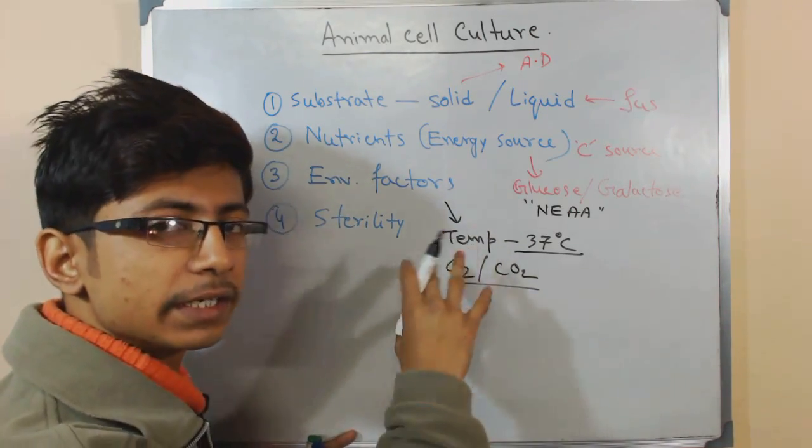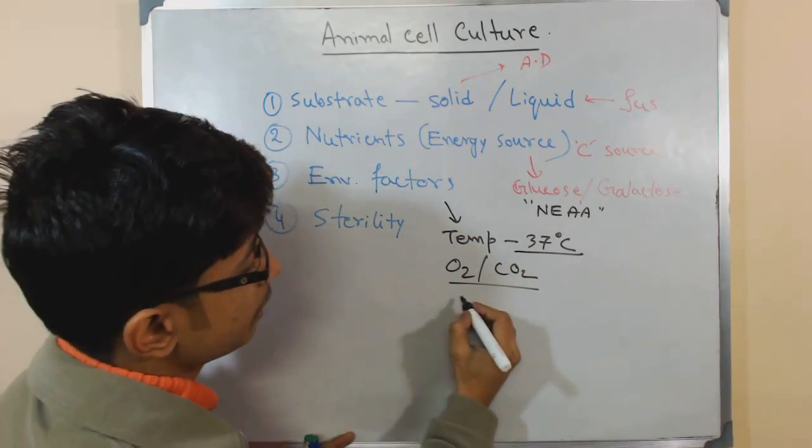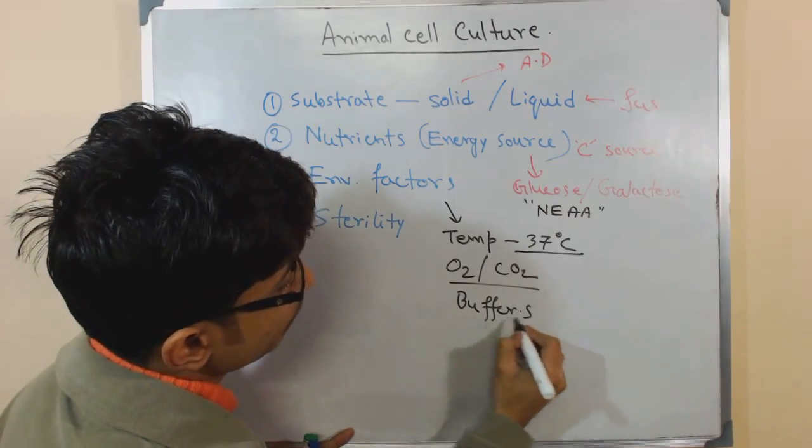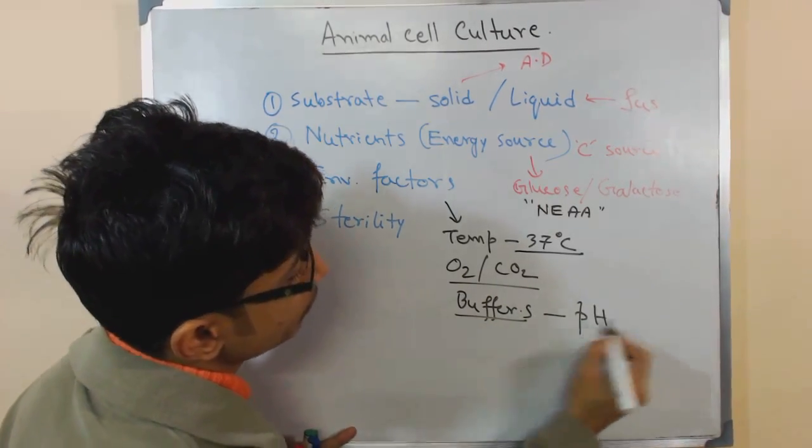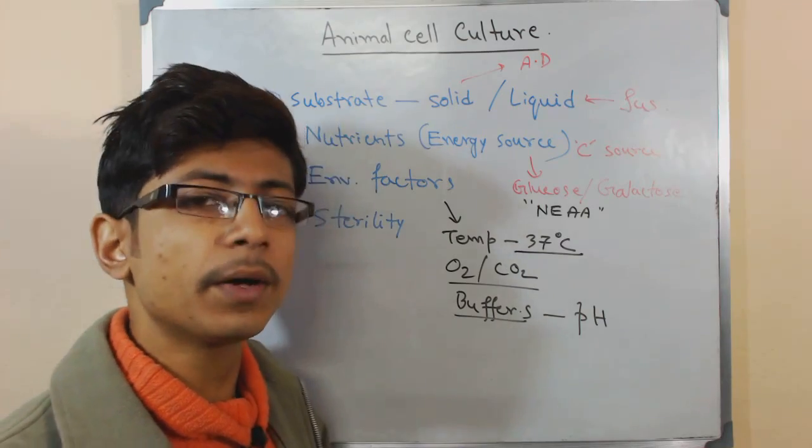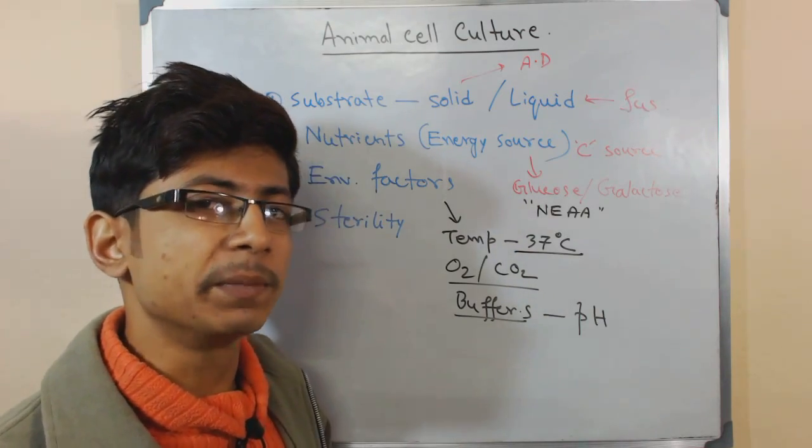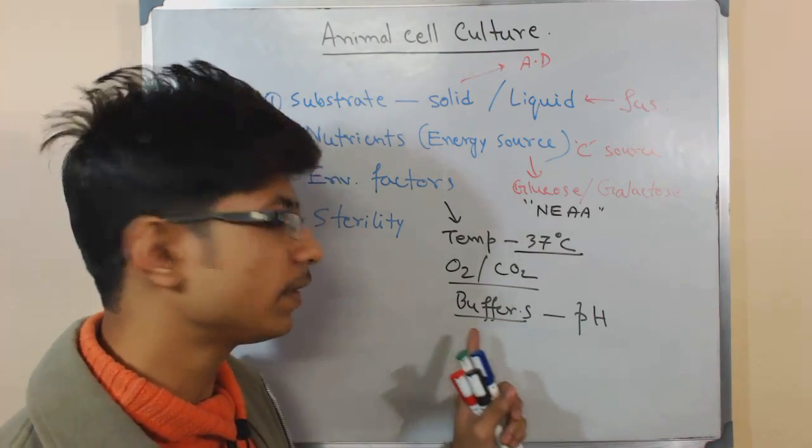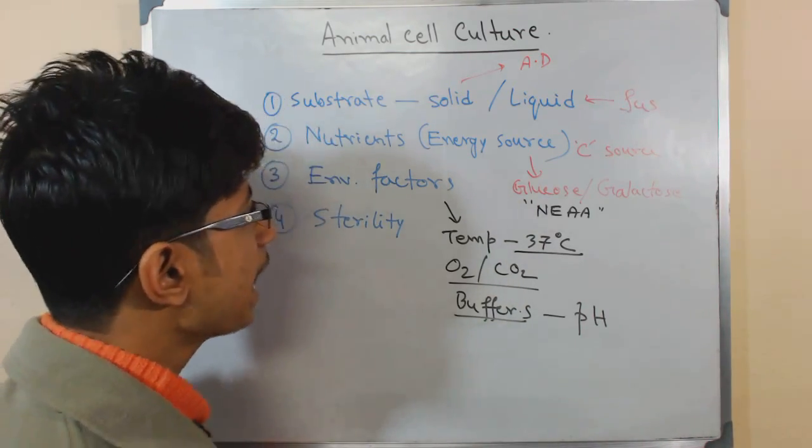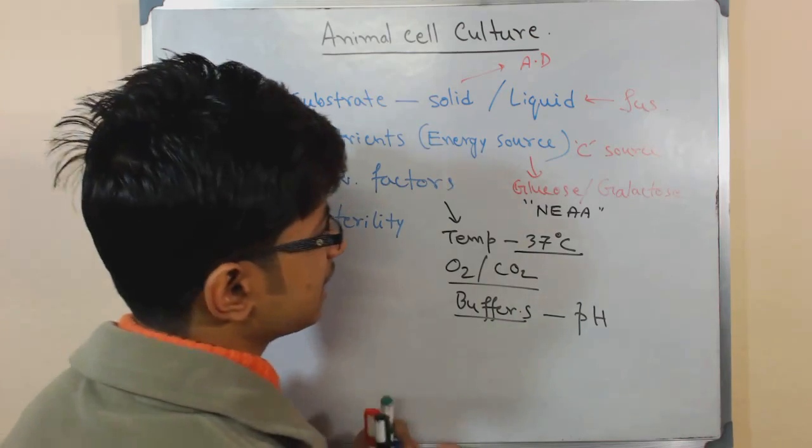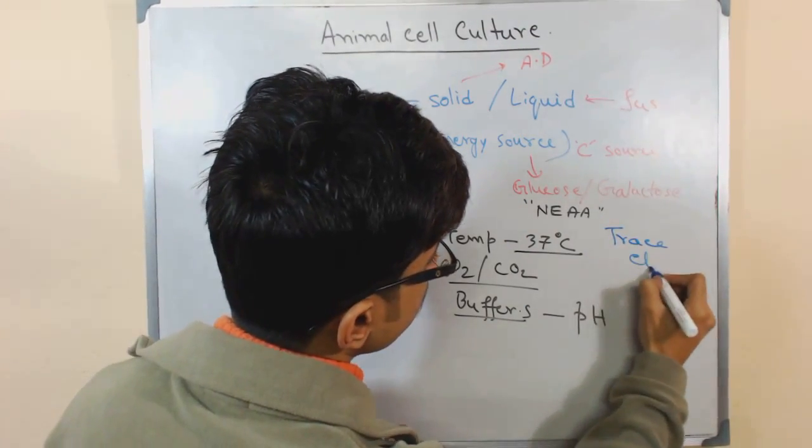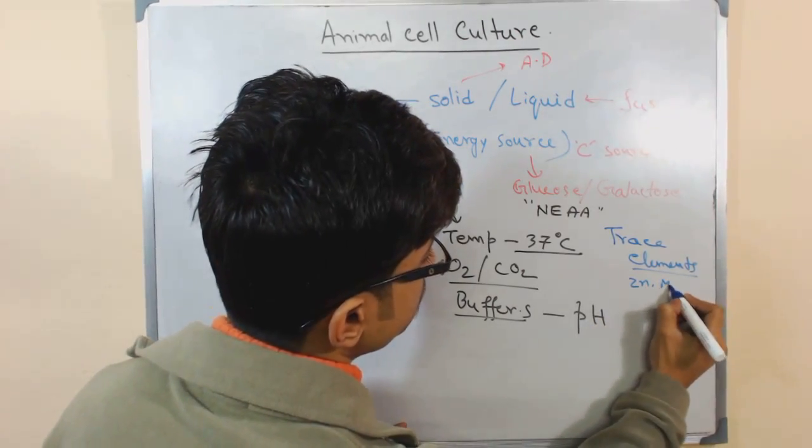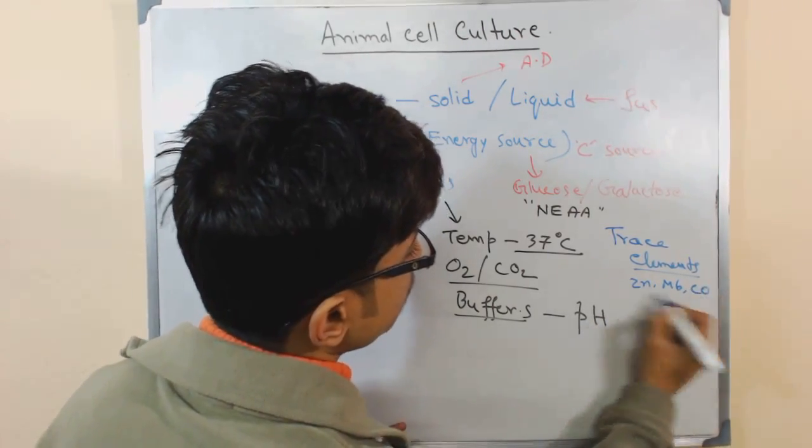This balance is maintained in different atmospheric chambers. Then we require proper balance of buffering system - buffers to maintain the pH of the media. Buffers are very important. In our body it is completely buffered all the time so that problems won't happen. That's why strong buffers are required. And also in the nutrients part we require trace elements - different types of trace elements or micro elements like zinc, molybdenum, cobalt and so on.